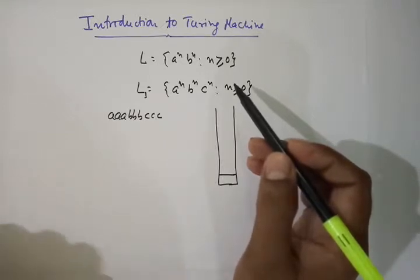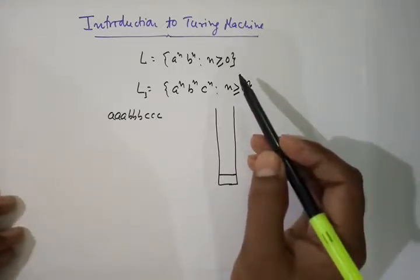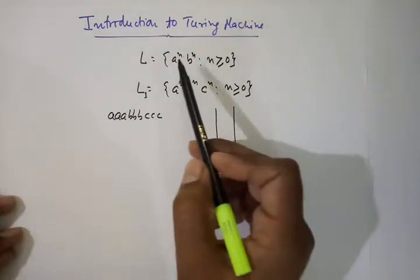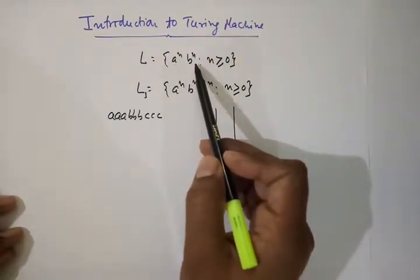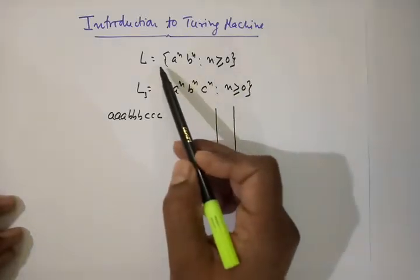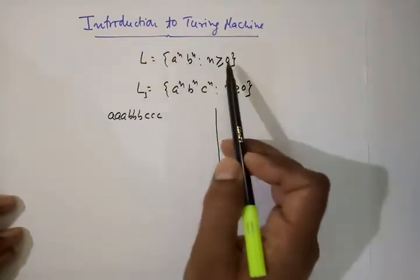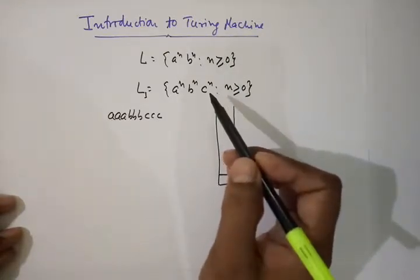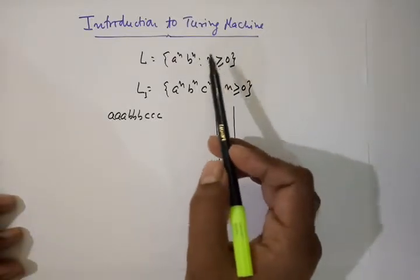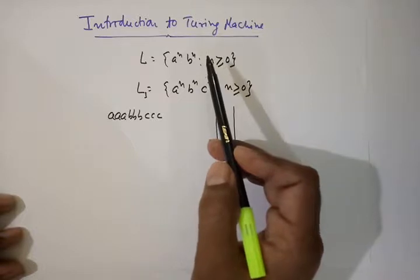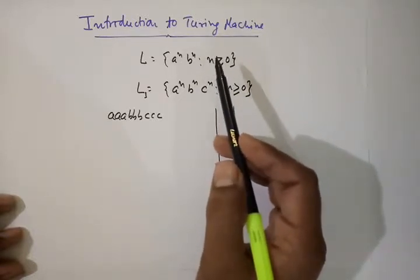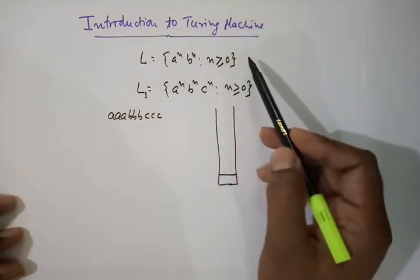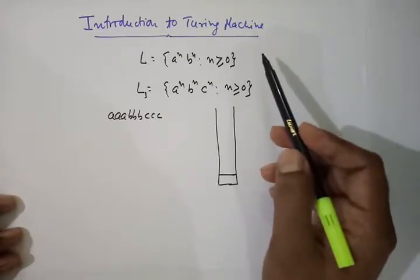DFA and NFA can accept those languages which are regular in nature. We cannot design a DFA or NFA for the language a^n b^n such that n ≥ 0, because this language is not regular. We need a more powerful machine, and that machine was pushdown automata. In fact, pushdown automata can accept all languages which were not accepted by DFA or NFA — the class of languages called context-free languages.